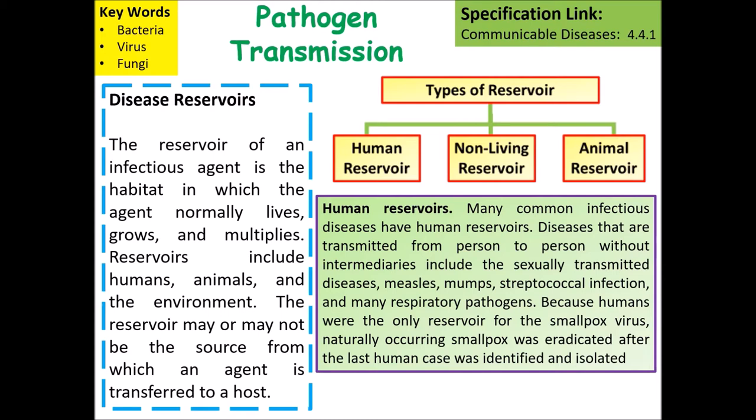One notable example of a human reservoir disease is smallpox. Because smallpox only had a human reservoir, it was able to be eradicated through a long process of vaccination.